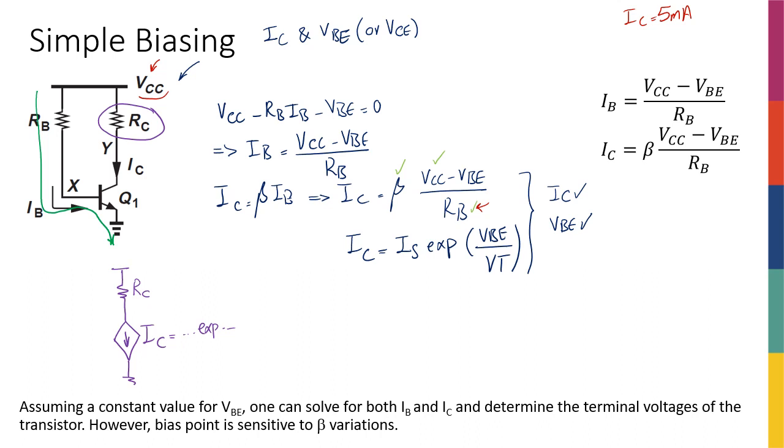So RB is the only thing that matters in terms of biasing. RC, of course, matters for other things that we're going to see. It actually is very important to set the gain of the amplifier, as we will see later in the future weeks.